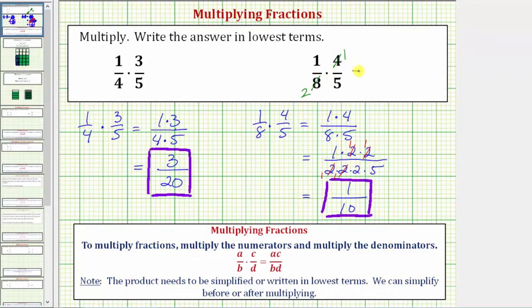Notice in this form, when we multiply, the product will already be in lowest terms. 1 times 1 equals 1, and 2 times 5 equals 10. And of course, we can show the same simplifying in this form here, by simplifying this 4 to a 1, and this 8 to a 2. I hope you found this helpful.